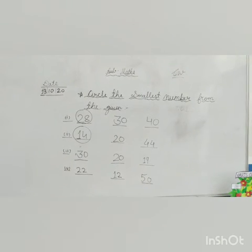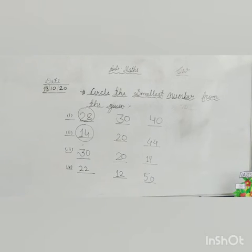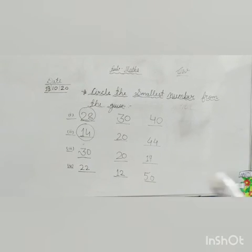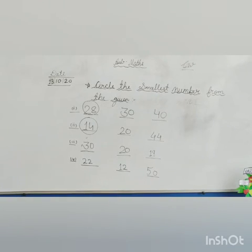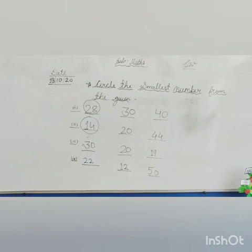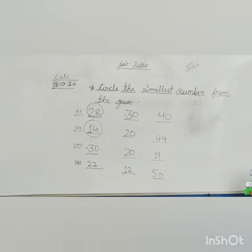Next, 30, 20 and 19. So, tell me kids, which number is smallest here? Yes, 19. Baqi jo number hain, after 19 count hotate hain. Thik hai, 19 ke baad hotate hain. So, that's why the 19 is the smallest number. So, circle on the number 19.